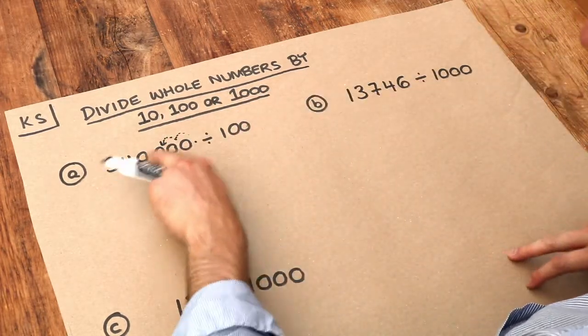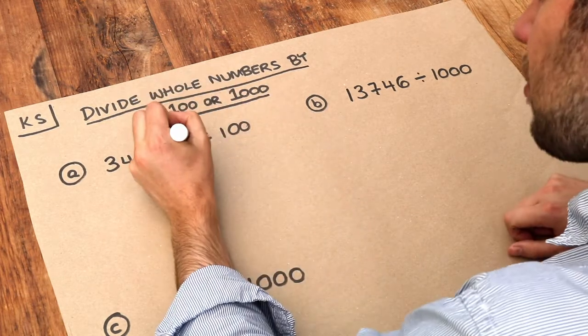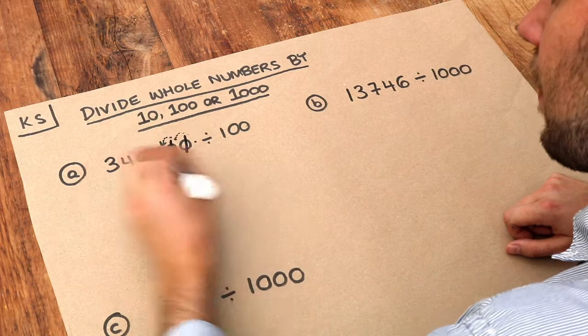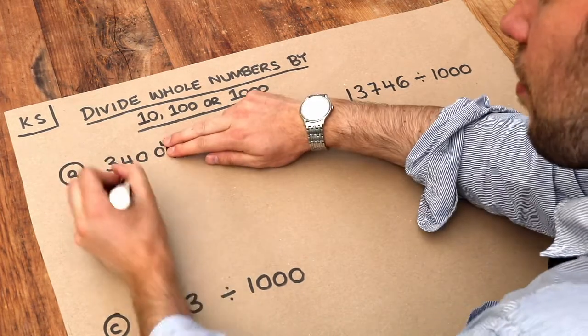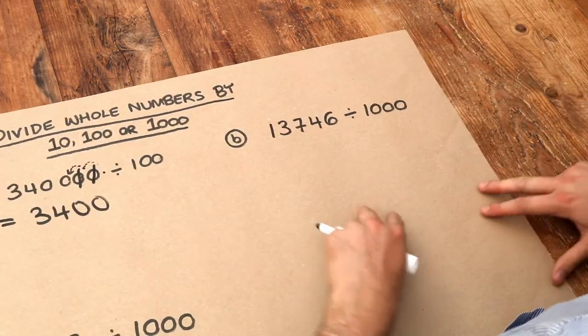The answer is 3400. In cases where we've got lots of zeros on the end, when we divide by 100, we can just cross off the last two zeros and we're left with 3400. What about this one?